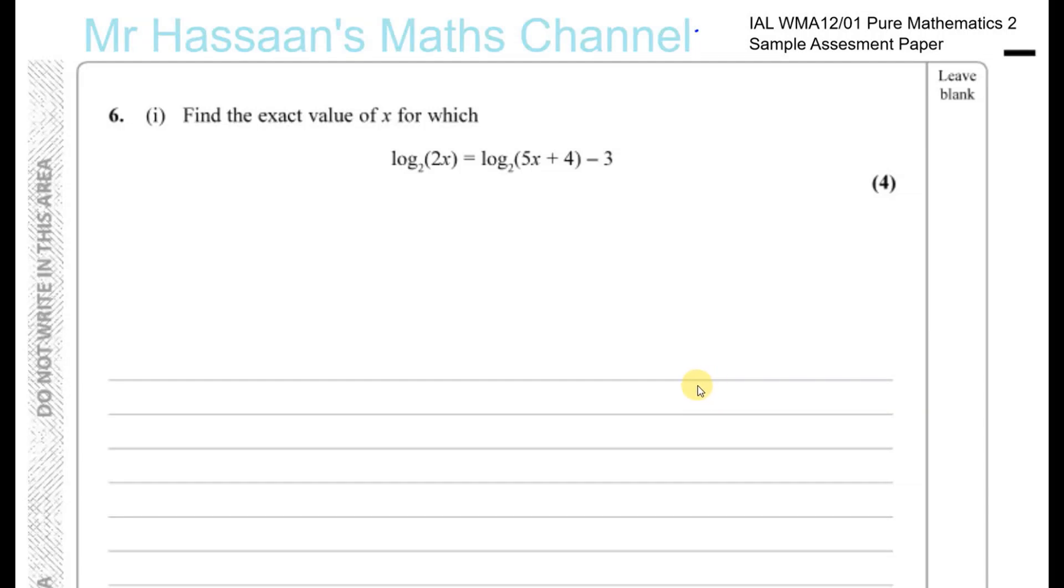Question 6, part 1 of Pure Mathematics 2 sample assessment paper for the International A-Level. A logarithms question: find the exact value of x for which log to the base 2 of 2x equals log to the base 2 of 5x plus 4 minus 3.